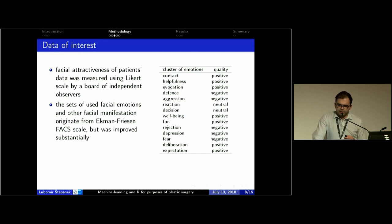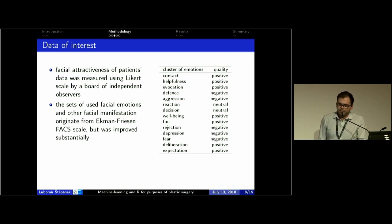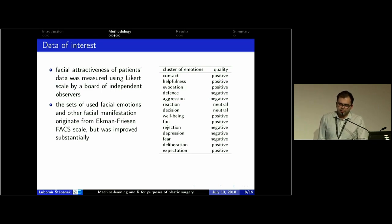Facial attractiveness was measured using a seven-point Likert scale by a large board of independent observers. People on the board used numbers from minus three, minus two, and so on, up to plus three to assess the attractiveness level of an observed facial image. The set of facial emotions used in the studies was based on the Ekman-Friesen FACS — Facial Action Coding System. This system, while old, was improved by increasing the number of defined emotions and by experimentally assigning a valence — negative, neutral, or positive — to each emotion.